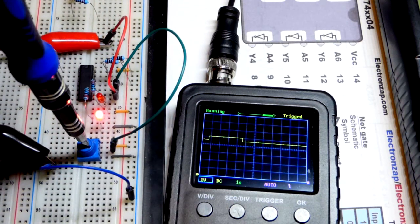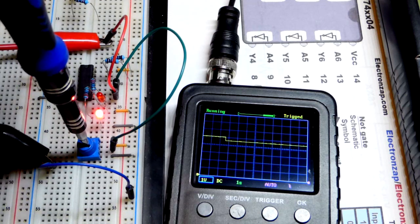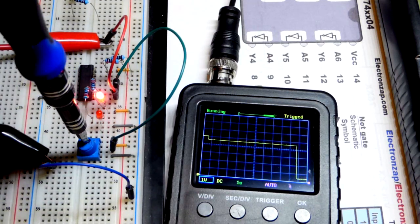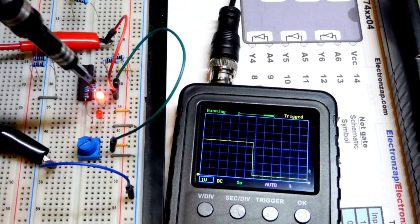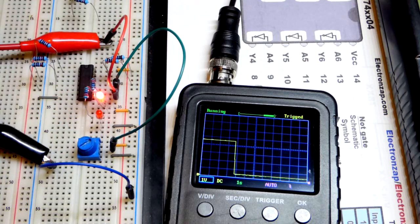Now of course, since it's an inverter or a not gate, if I go to the other extreme to the positive rail, we're given a high signal, we have a low output. And you can see that on here pretty good.